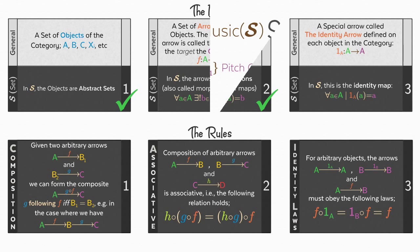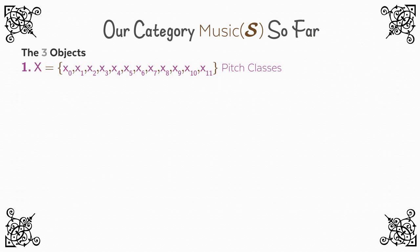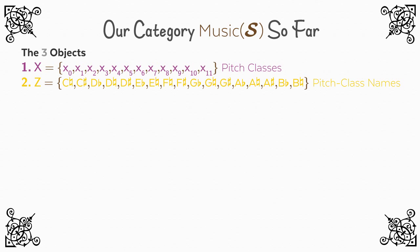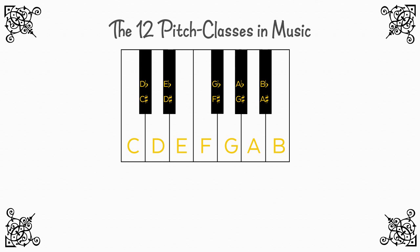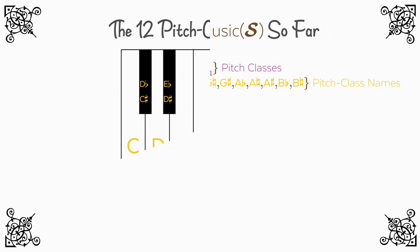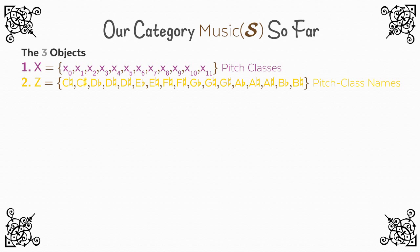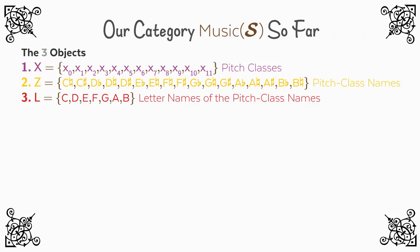We defined three objects and four maps. The objects were: X, the set of pitch classes, which will form the basis of our formulations in Music Theory; Z, the set of pitch class names — there are 12 pitch classes, but as we saw in Video 1, the pitch classes corresponding to the black notes on the piano had two possible names, so Z has size 17 (we're ignoring double sharps and flats until our real formulation); and L, the set of letter names of the pitch class names, which has size 7.